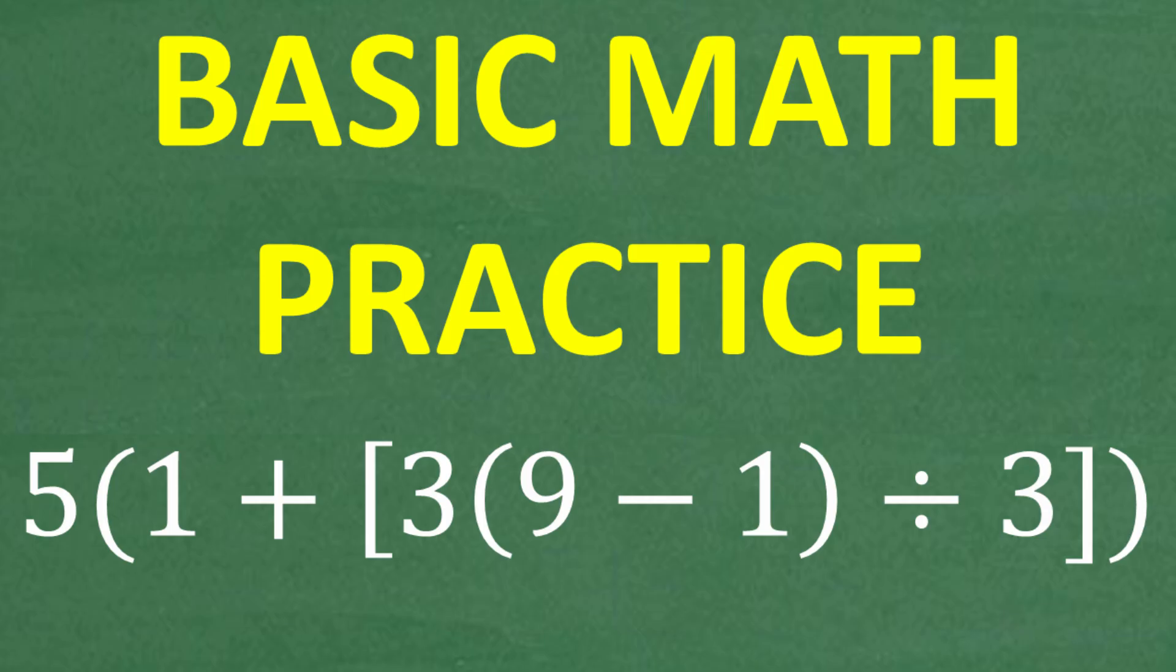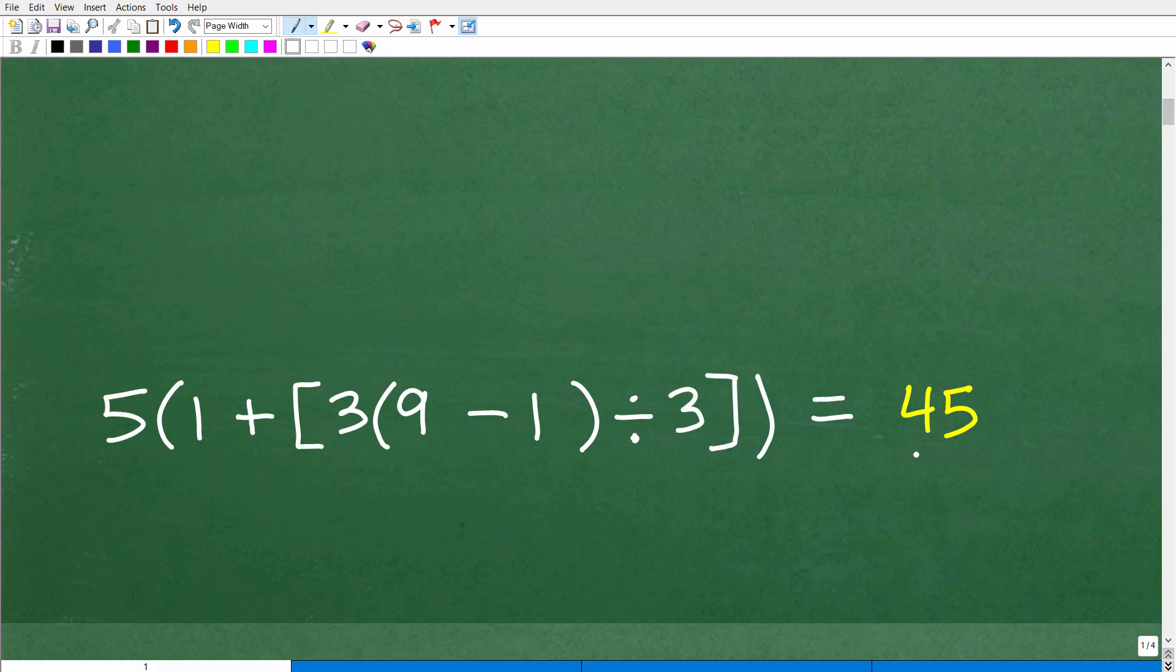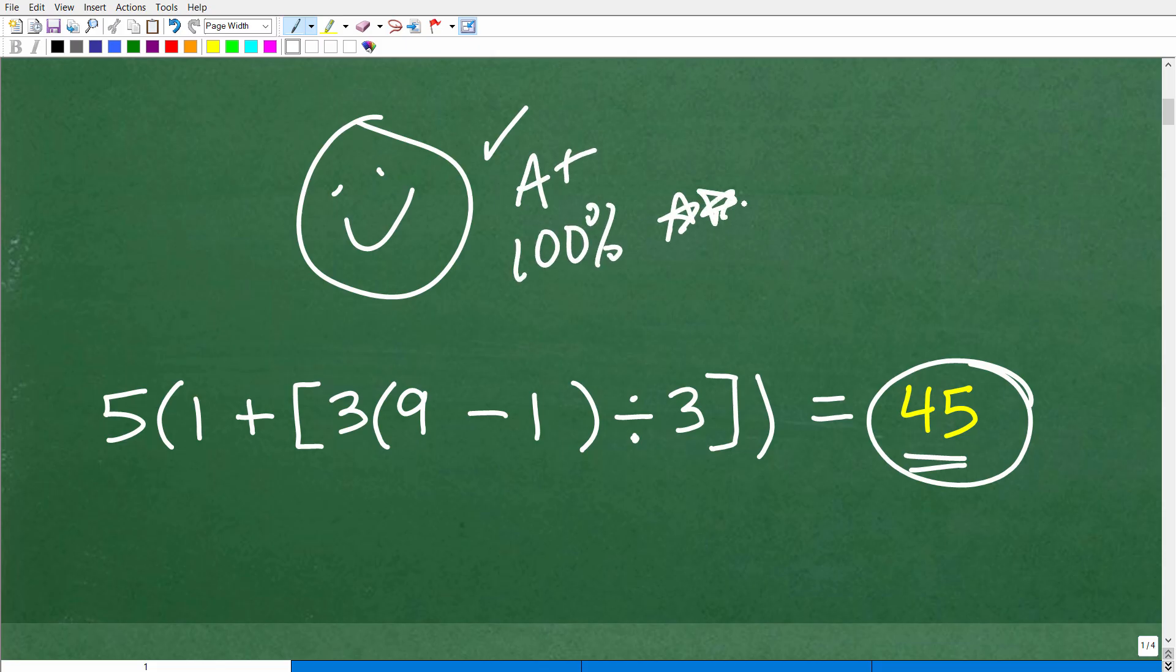Let's go and take a look at the answer. And the answer is 45. So we have 5 times 1 plus bracket, 3 times 9 minus 1, all that divided by 3 bracket and parentheses. The answer is 45. All right, so how did you do? Well, if you got this right, let me give you a nice little happy face, check mark, an A plus, a 100%, and we'll give you some stars so you can have an extra special day. Nice job.